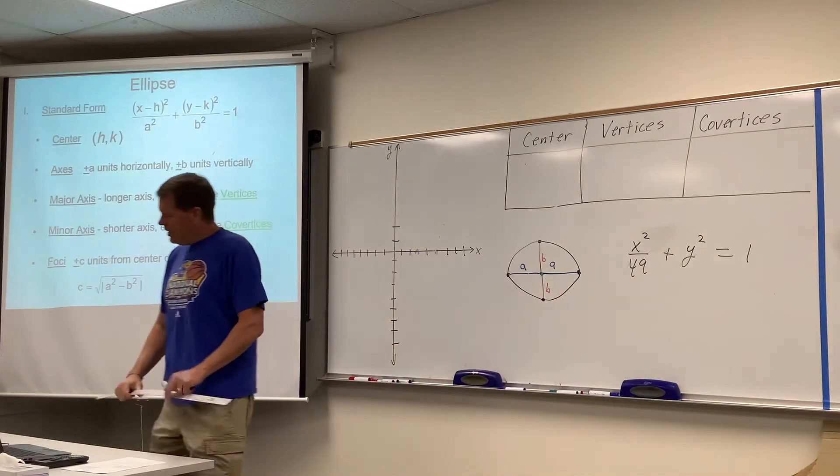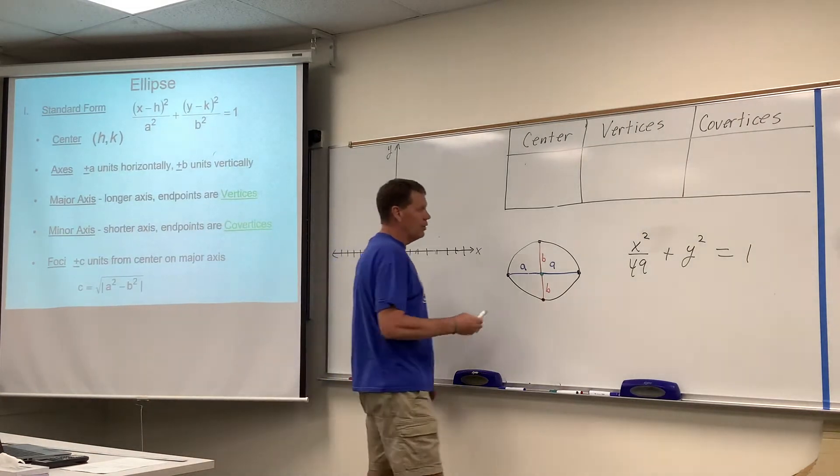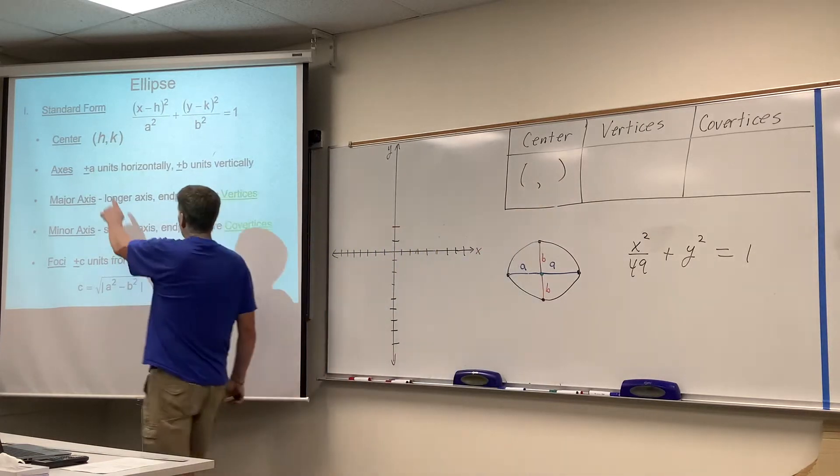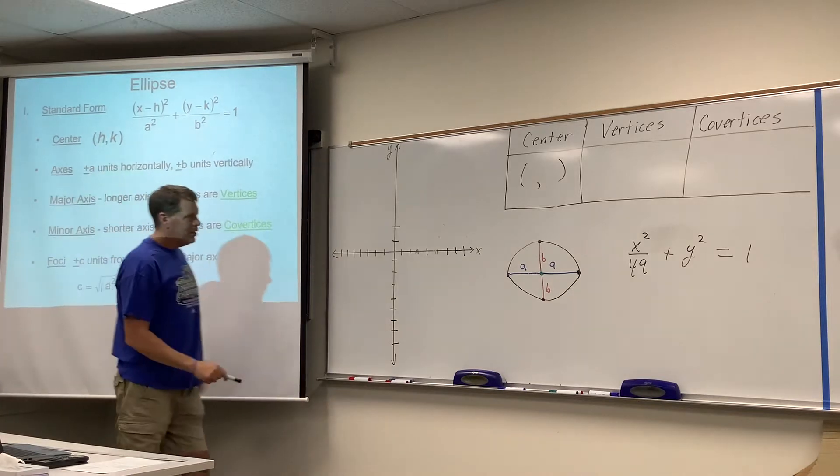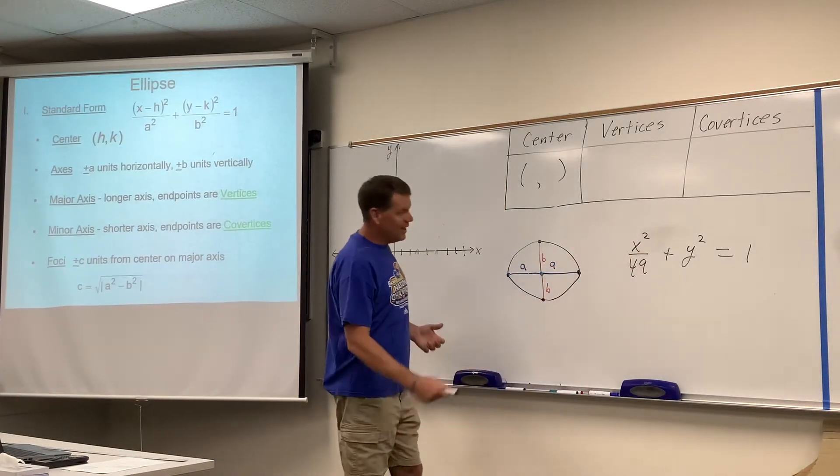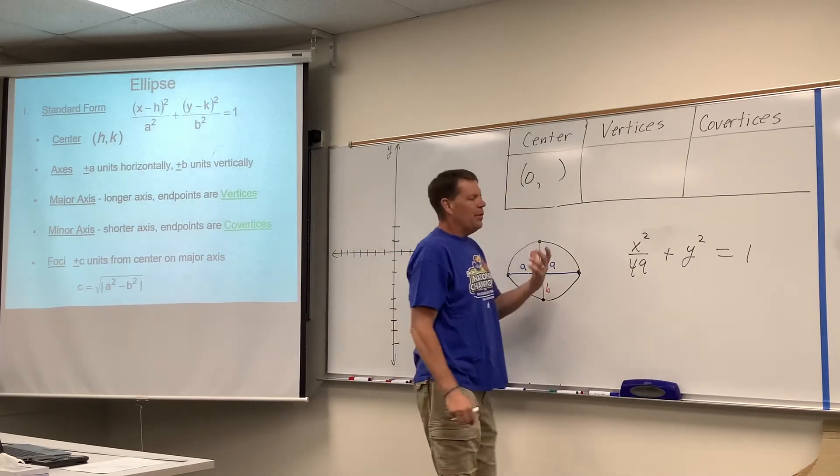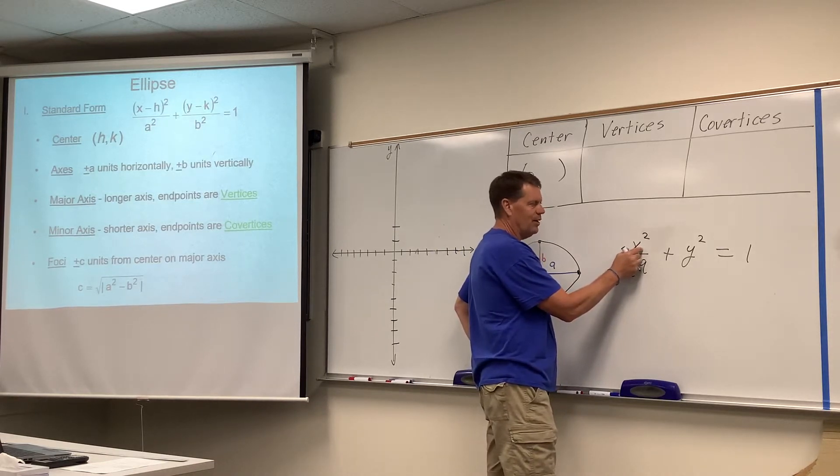It would make sense to begin finding the center, and that again would be an ordered pair, and its x coordinate is the number being subtracted from x. And you notice here there's not anything being subtracted from x, but isn't it actually zero? Remember, we also said, what does x have to be for that to equal zero? Zero itself.